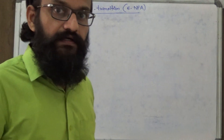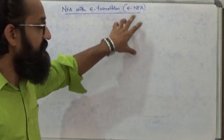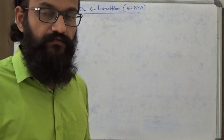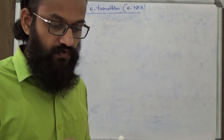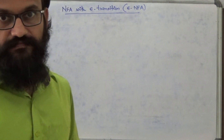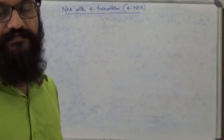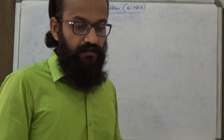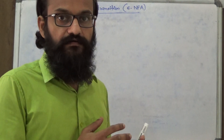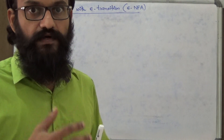This lecture deals with NFA with epsilon transition, also termed as Epsilon NFA. If a finite automata is allowed to take a transition from one state to another without consuming an input symbol, then you call that finite automata an Epsilon NFA. Without consuming anything, this finite automata is allowed to take a transition or change state from one to another.